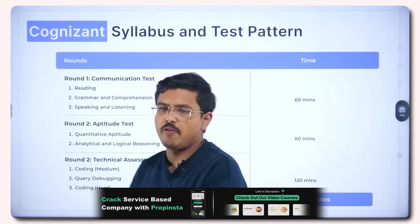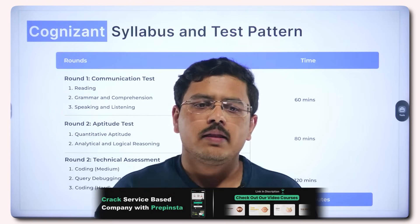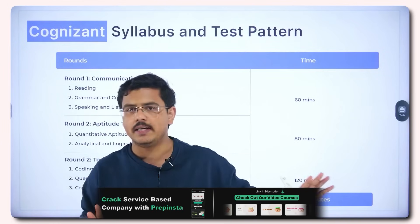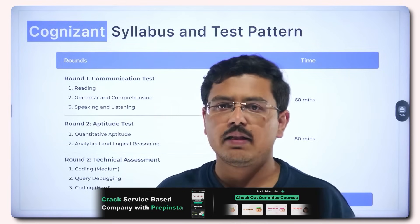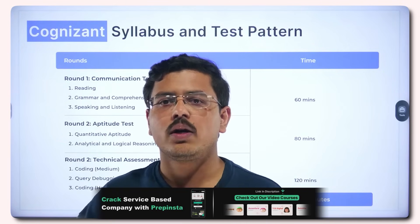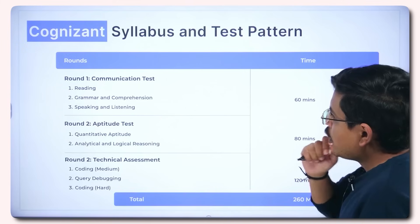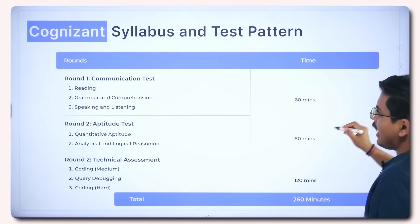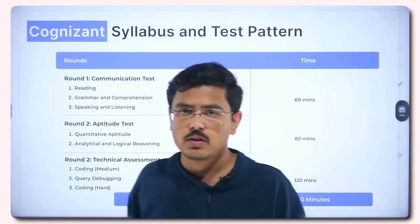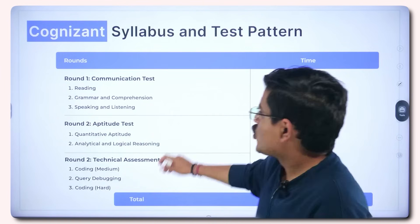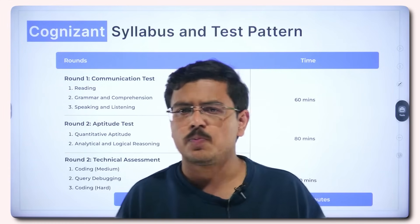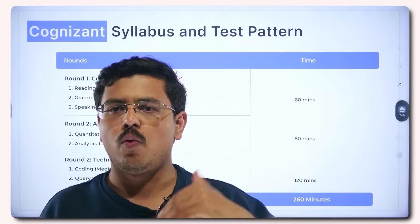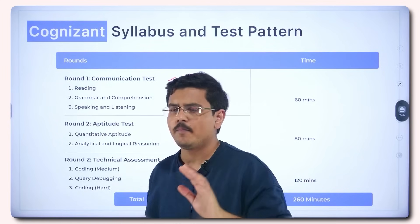Whenever I explain any syllabus or test pattern, I always give you the skeleton of the exam first. Here you will have three rounds primarily. In round one, you will have a communication test where reading, grammar and comprehension, speaking and listening skills would be tested. Usually it is an AI-based test where you either have a textual question written and you record your voice for the speaking and listening, and you get some listening assessments and you solve them. A simple test.